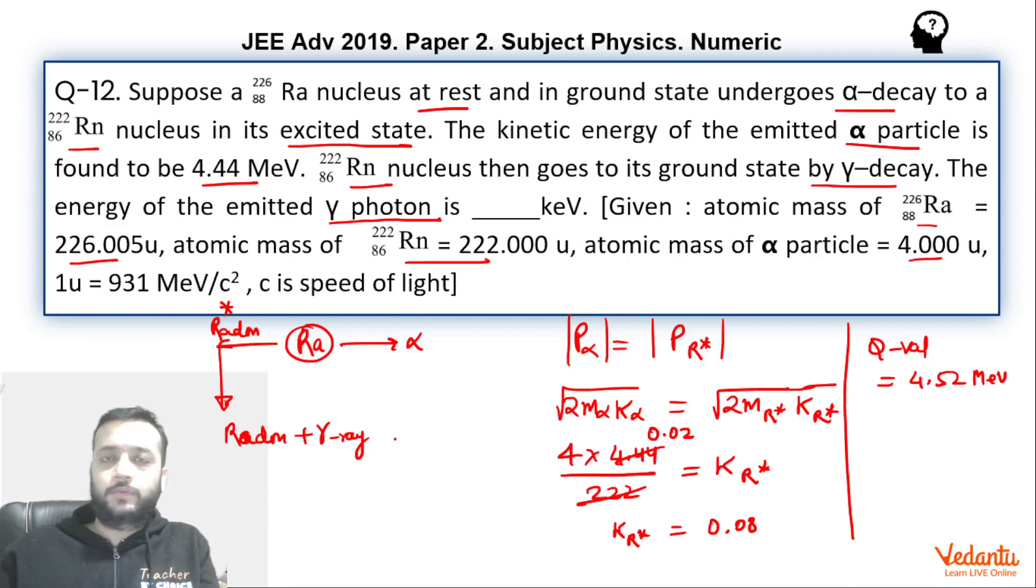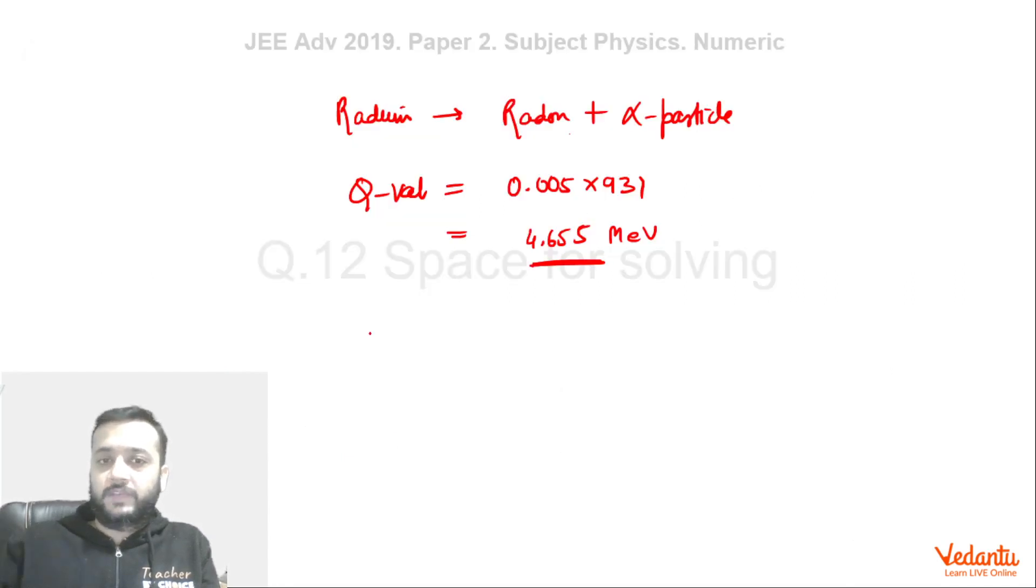So we can say the energy of the gamma ray will be 4.655 minus 4.52, which is nothing but 0.135 mega electron volt, which is 135 kilo electron volt. This will be the answer. So I hope you would have understood the solution, that's it, thank you.